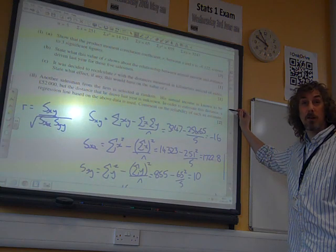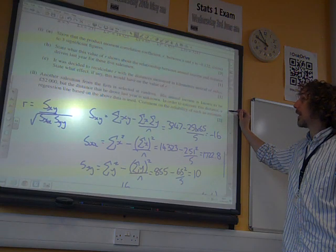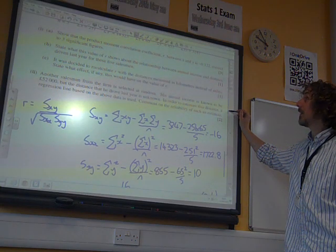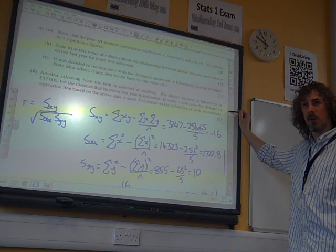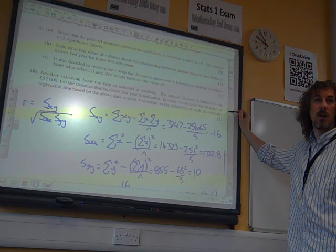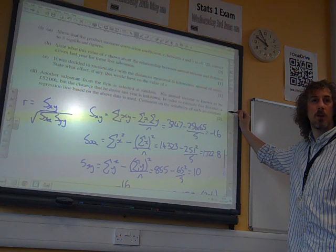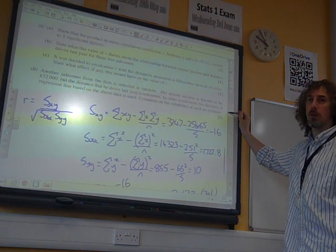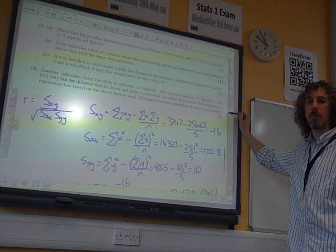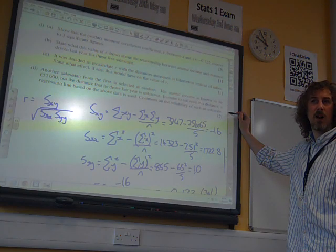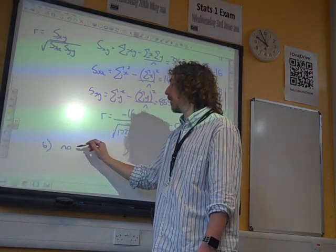For three marks. I know, it's a lot of graft, isn't it, for just three marks. Part B: State what this value of R shows about the relationship between annual income and distance driven last year for these five salesmen. Minus 0.122. There is no significant relationship between them. There's no correlation between them. If you start talking about a negative, a slight negative correlation, then they're probably not going to mark you wrong. But it's not really the right answer. That close to zero, we're going to say there's no significant correlation.